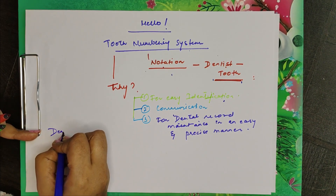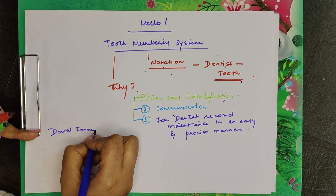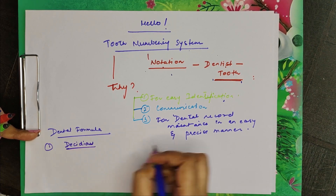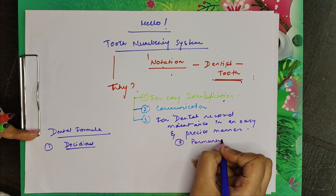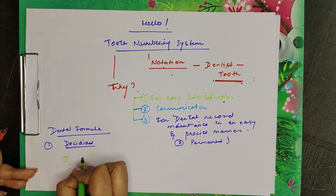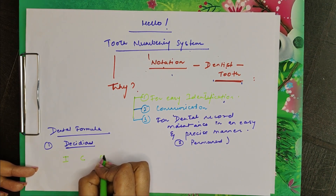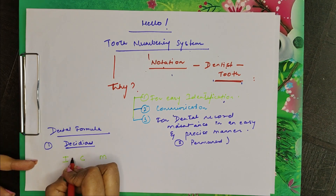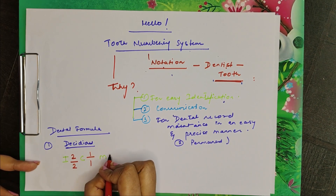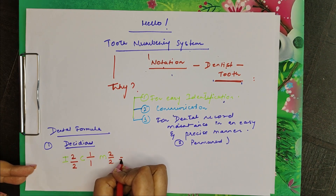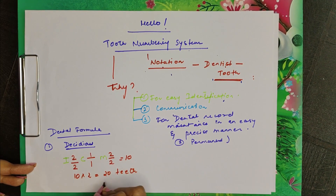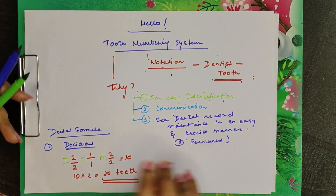We will study about the dental formula. Here we will study about deciduous and permanent dentition. In deciduous dentition: incisors — we have central incisor and lateral incisor; canine — one in upper jaw and one in lower jaw; molars — two. So that is ten per jaw, and in both jaws we have twenty teeth total.